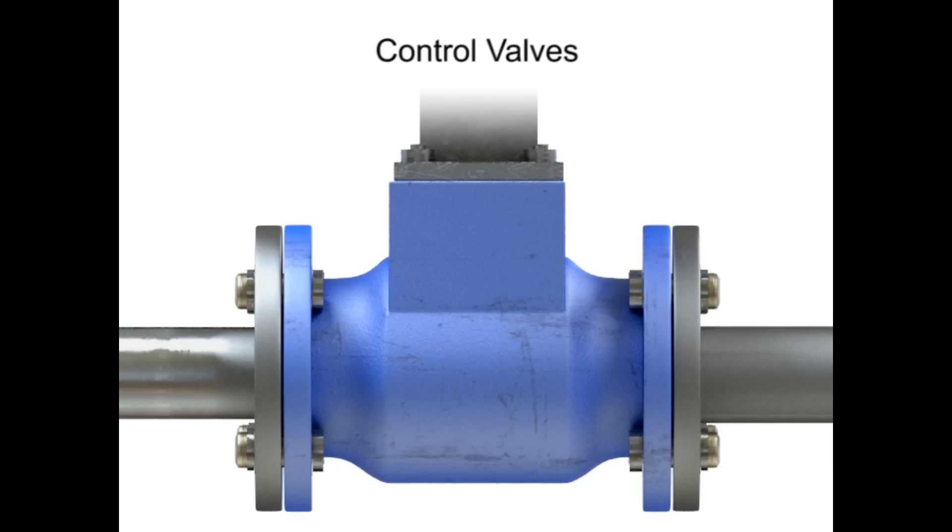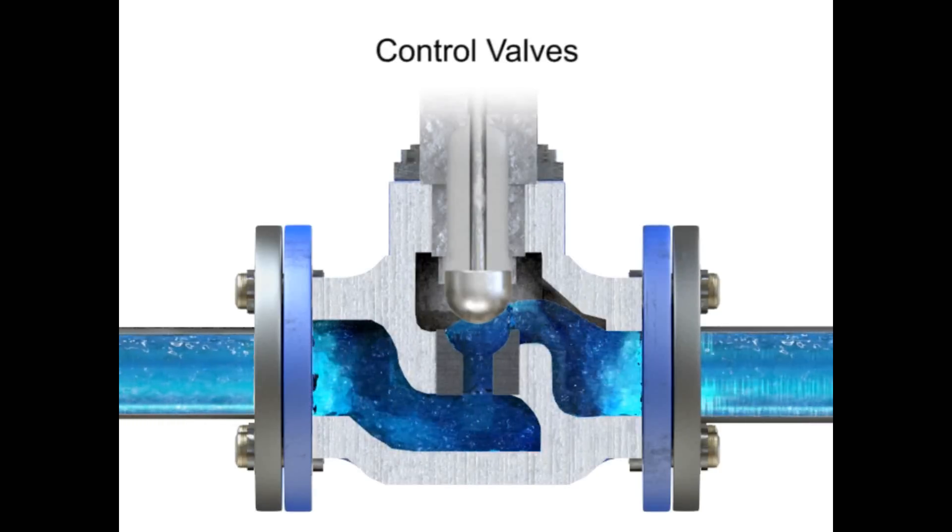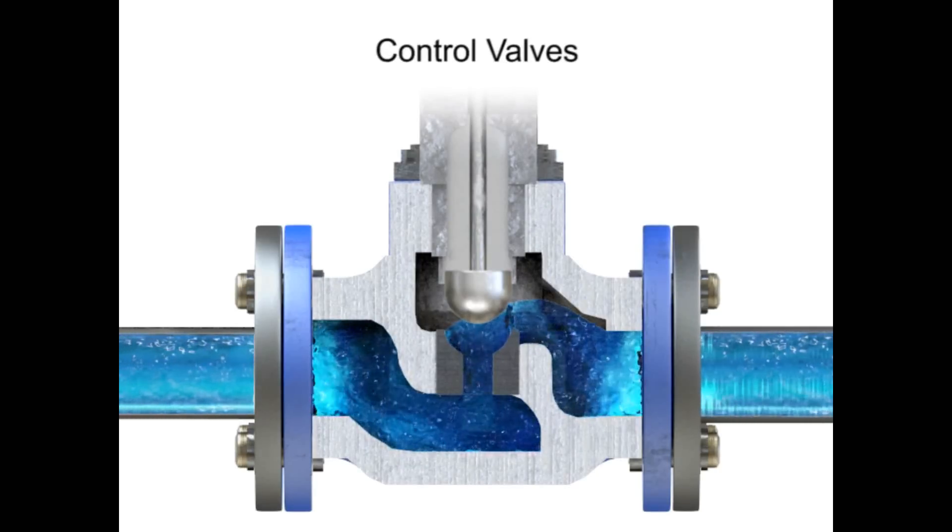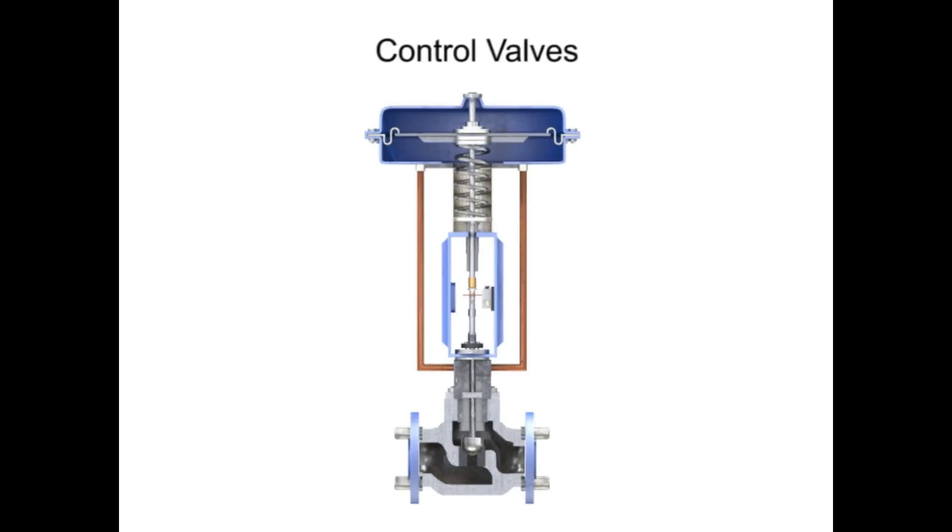Control valve actuators control fluid in a pipe by varying the orifice size through which the fluid flows. Control valves contain two major components: the valve body and the valve actuator.